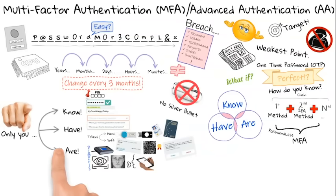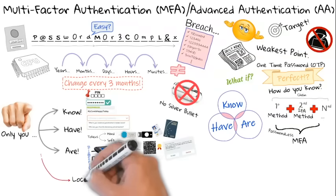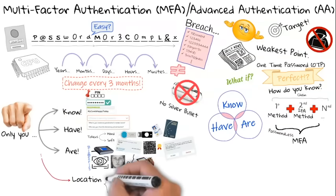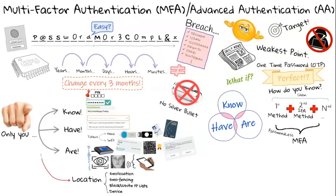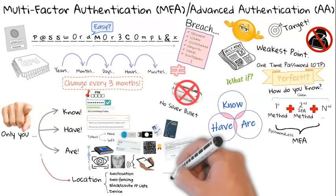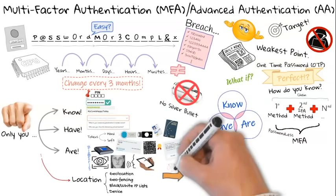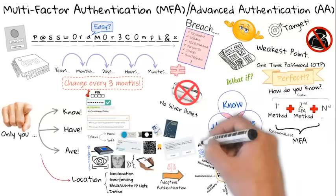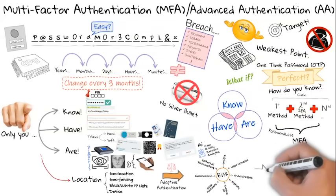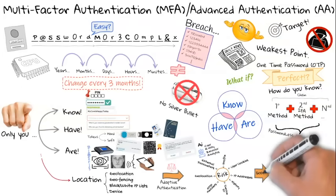Some people say the fourth type of method is location. In this situation, geolocation, geofencing, and the user's IP address can be on a whitelist or a blacklist, in addition to identifying the user's device — all are ways to identify the user's location. However, it seems safer to consider location as a complementary validation, but never as 2FA or an authentication factor itself. The most widely recognized concept is that location is taken into account in adaptive authentication, where more information is gathered than just the location.